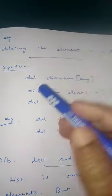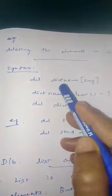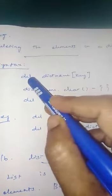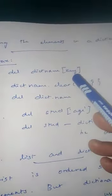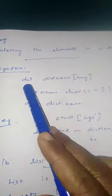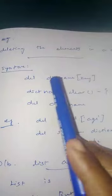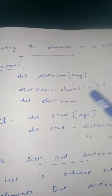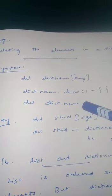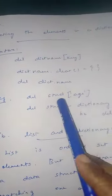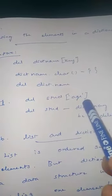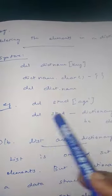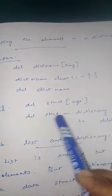Next, how to delete elements in a dictionary. To delete the entire dictionary: del dictionary_name. To delete a particular element: del dictionary_name[key]. To clear all elements: dictionary_name.clear(). For example, del student['age'] deletes age alone, while the remaining elements stay. del student deletes the entire dictionary.